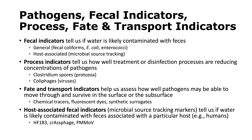Fate and transport indicators help assess how well pathogens might move through surface or subsurface environments. These don't have to be microbial — they can include chemical tracers, fluorescent dyes, or synthetic surrogates. Host-associated fecal indicators, also called microbial source tracking markers, tell us if water is likely contaminated with feces from a particular host. HF183 is perhaps the most commonly used host-associated fecal indicator.